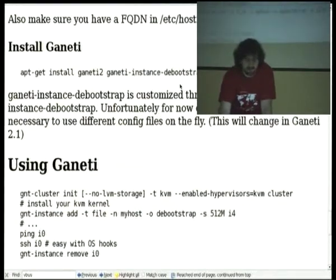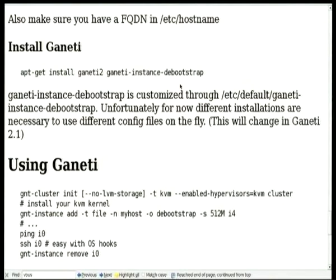Then we just install Ganeti. This assumes SID right now — backports.org should work, otherwise you can backport it. It doesn't have any particular changes because it's basically a source-all package in Python, so you just need the dependencies. Then you want to customize ganeti-instance-debootstrap. There's a configuration file. And basically if you want more than one distro — SID, Lenny, and Squeeze all on the same system — you need more versions of the bootstrap. This is kind of unfortunate, we realize, so we will change this in Ganeti 2.1.